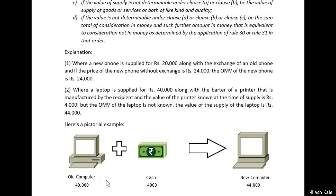Here is a pictorial example: an old computer valued at ₹40,000 plus cash of ₹4,000. Cash plus kind — total will be ₹44,000. This is the consideration according to Rule 27. This is very easy and clear to understand with this picture.